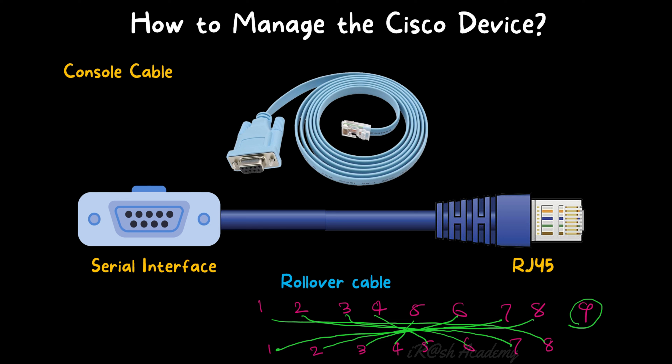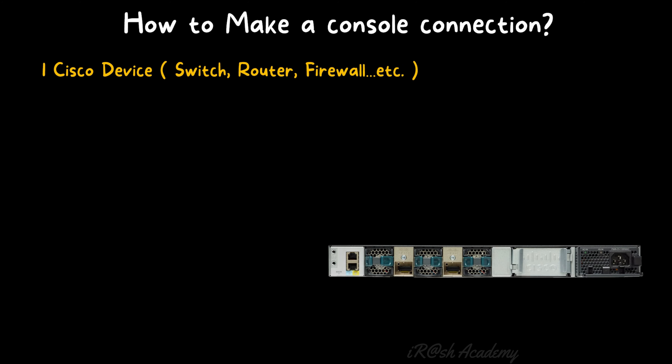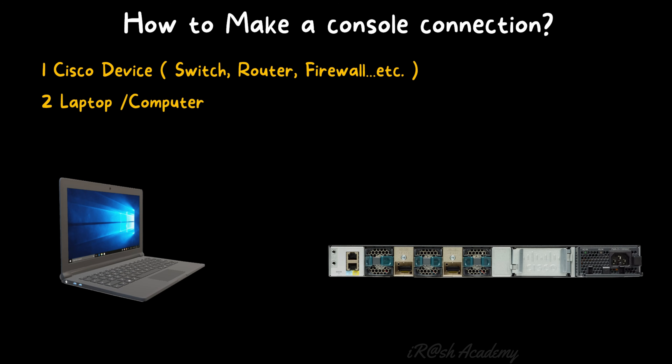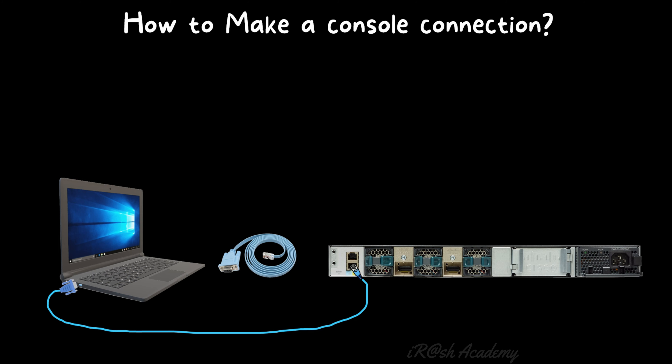To make a console connection we need three components: first, a Cisco device such as a switch, router, or firewall; second, a laptop or computer to get console access on screen and type commands; and third, a console cable or rollover cable. The serial interface side of the console cable connects to the laptop, and the RJ45 side connects to the console port of the network device.